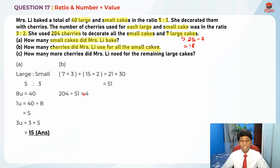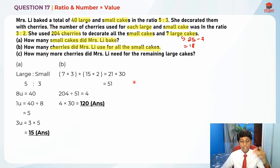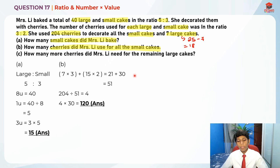Now that we know there are 4 groups, and 30 cherries were used to decorate all the small cakes per group, we take 4 times 30 = 120. So Mrs. Lee used 120 cherries to decorate all the small cakes. That's the answer for Part B.